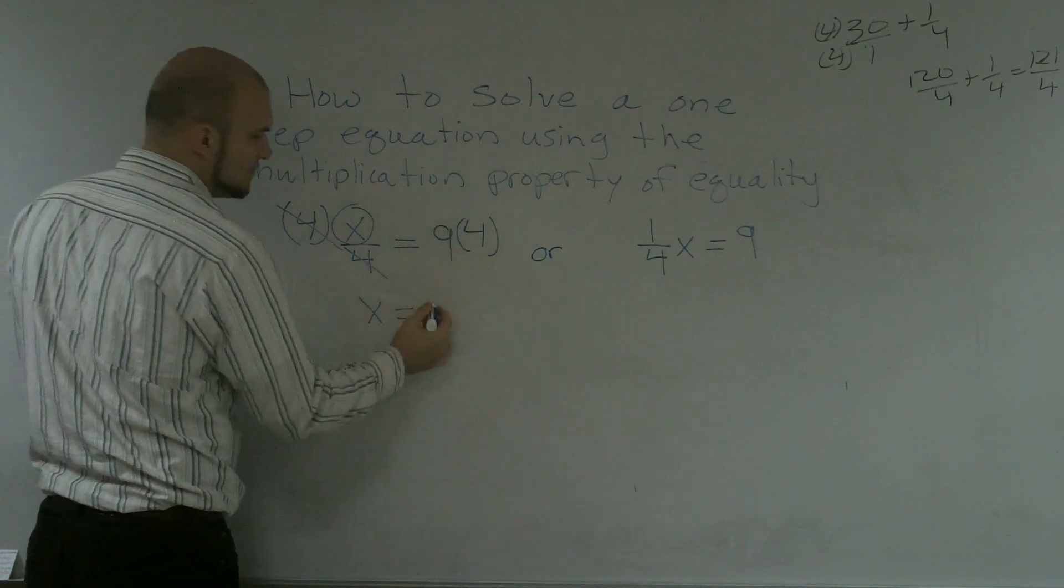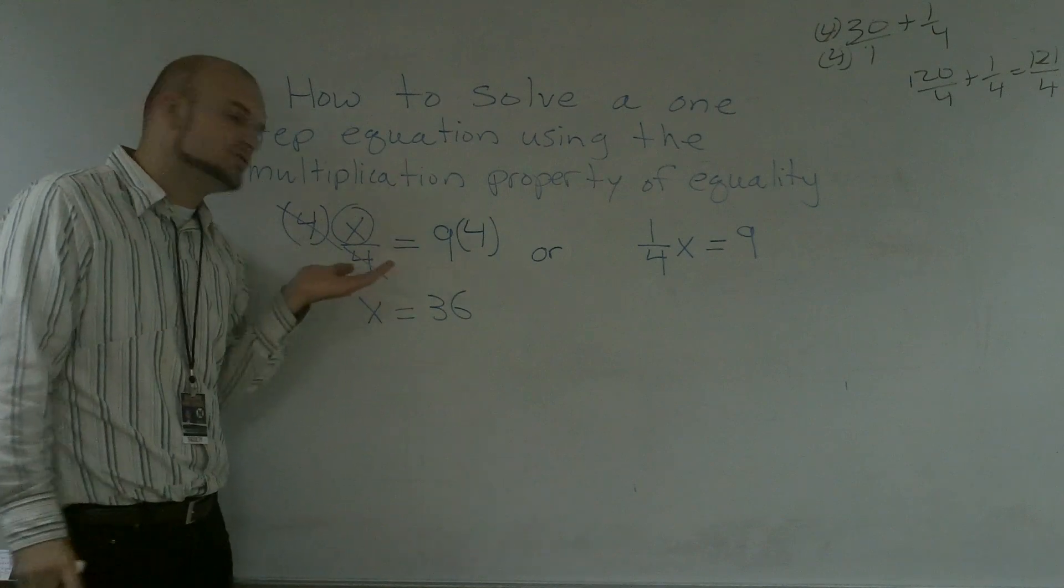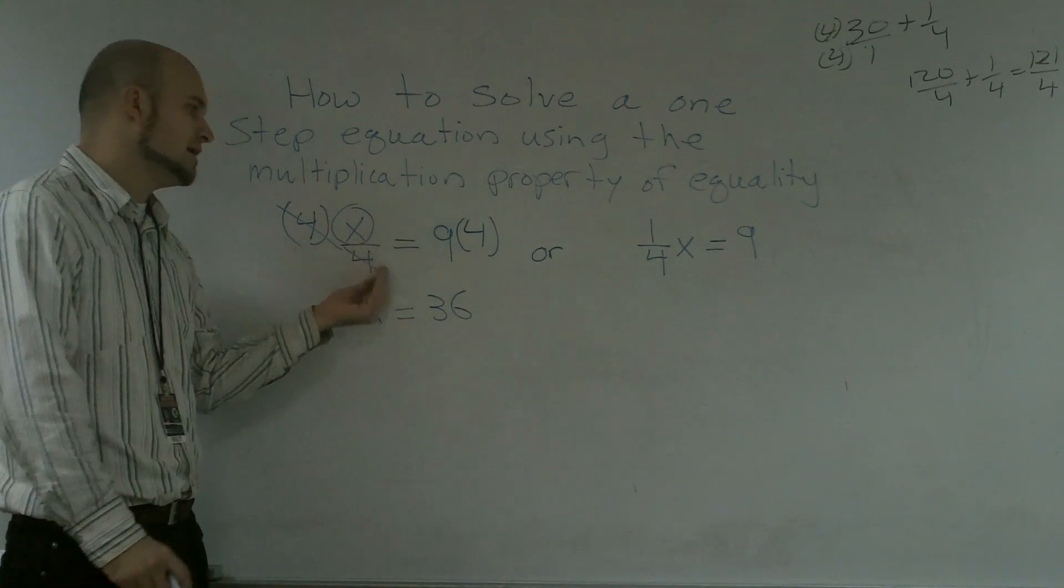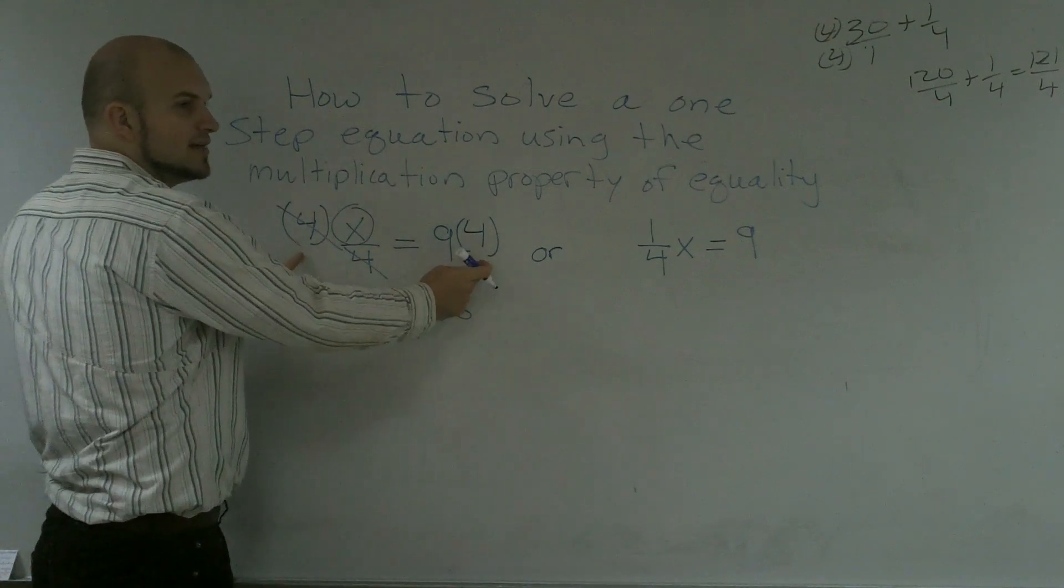So x is going to equal 9 times 4, which is 36. So one way, whenever you have a number on the bottom, you always got to think of, you're going to want to multiply, and then you have to use the multiplication property of equality to make sure you multiply that 4 on both sides.